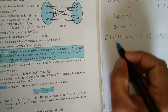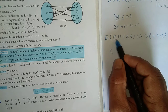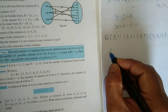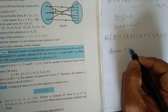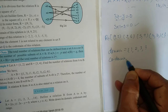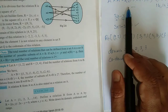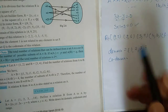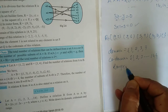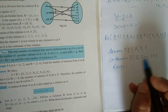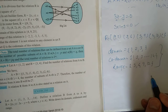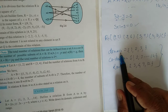Now we find the domain, which is the collection of all first elements of the ordered pairs. So the domain is {1, 2, 3, 4}. The codomain is the set A itself, which contains elements 1 through 14. The range is the collection of all second elements of the ordered pairs, which is {3, 6, 9, 12}.